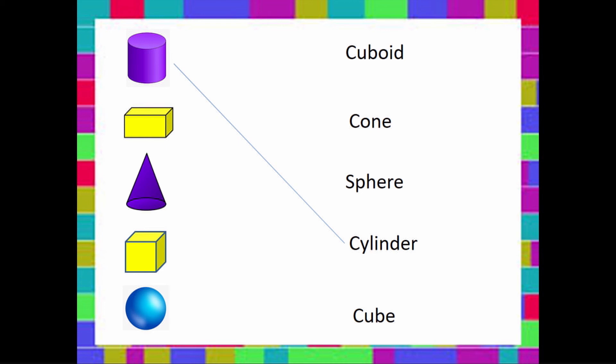It has faces that are not alike—they're not the same. Some are rectangular and some are square. It must be a cuboid. Let's look at our next shape.